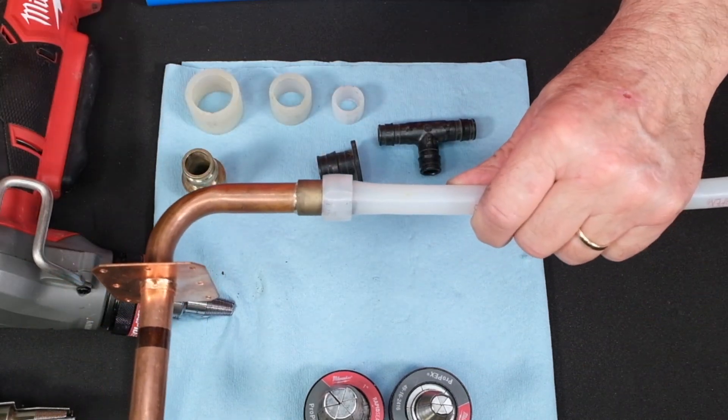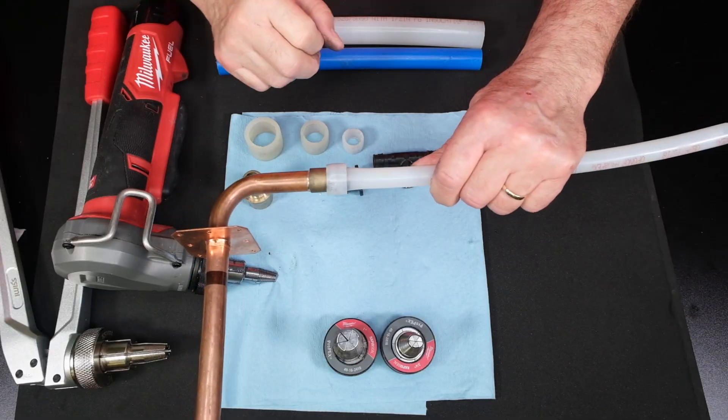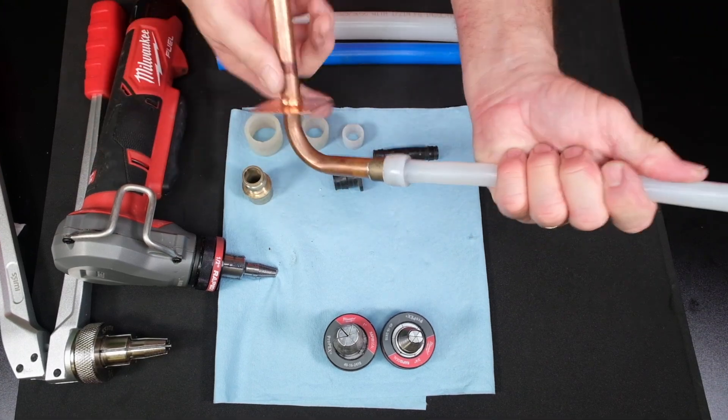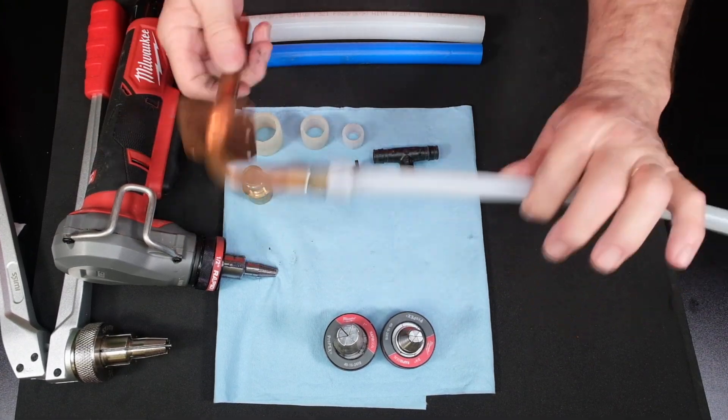And now you have a finished product. That's how you use PEX-A. It expands, then it shrinks down, and that's your finished product. So you've got a water-tight, sealed joint right there.